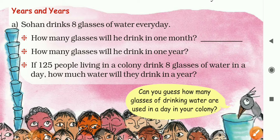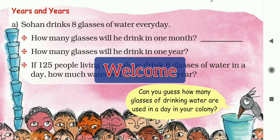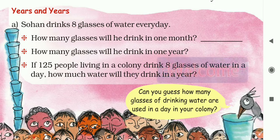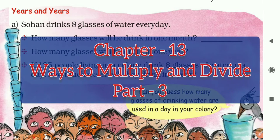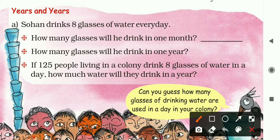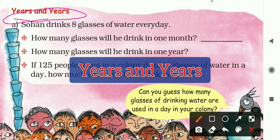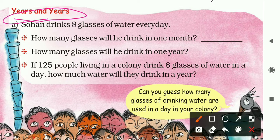Hello dear students and welcome back to this online class video. This is the third part of the 13th chapter 'Ways to Multiply and Divide' of Class 5 Mathematics. I am Jay Prakash. Let's start the class. Today's topic is 'Years and Years' and some problems are given here.